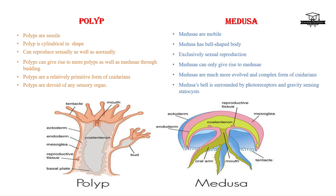Coming to polyp, they are sessile, which means they are attached to a substrate and can move from one part to another. On the other hand, medusa are entirely different from the polyp and they have the ability to move freely through water. Polyps have a cylindrical body shape with a single opening at the top known as the mouth.